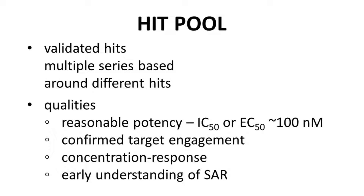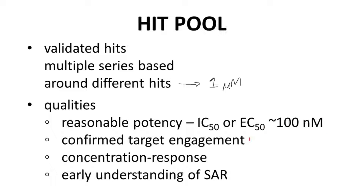A number of HITs will be elaborated in a corresponding HIT series, and compounds from each of these HIT series will show a range of properties. While a typical HIT may have an IC50 or EC50 of one micromolar, following preliminary SAR studies, the potency of the series may improve to around a hundred nanomolar. The compounds will have confirmed target engagement, appropriate concentration response, and an early understanding of SAR in the series.